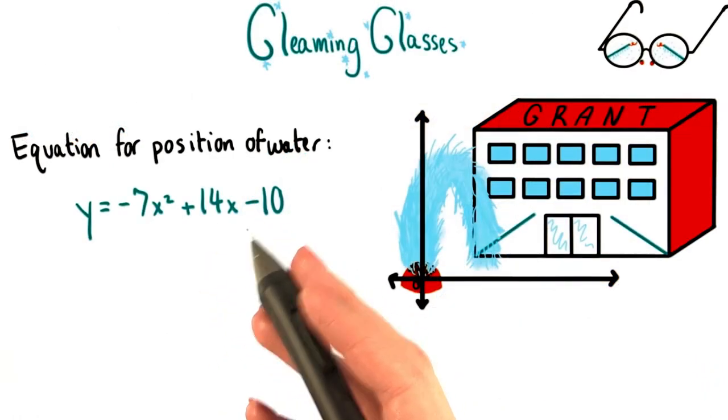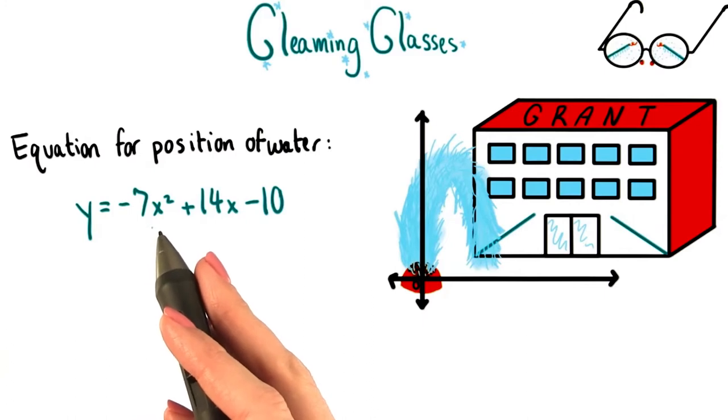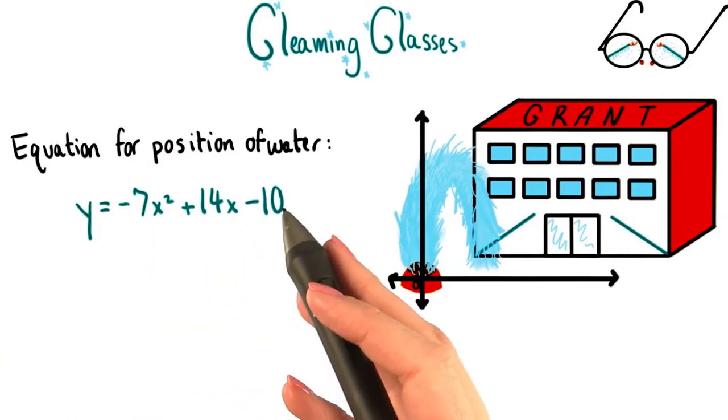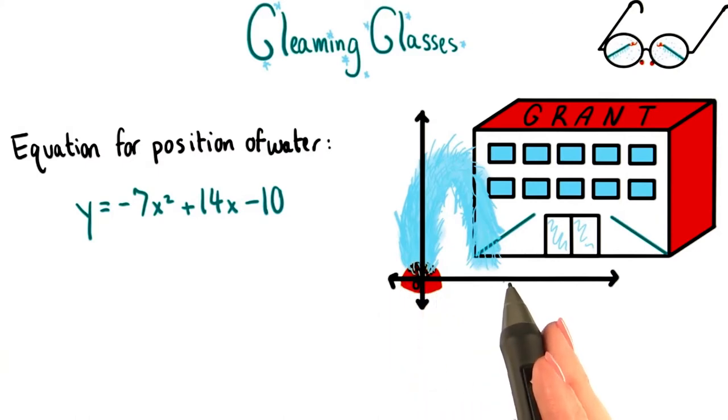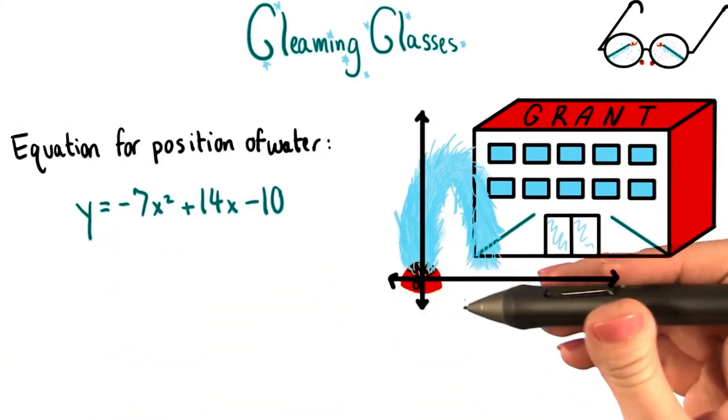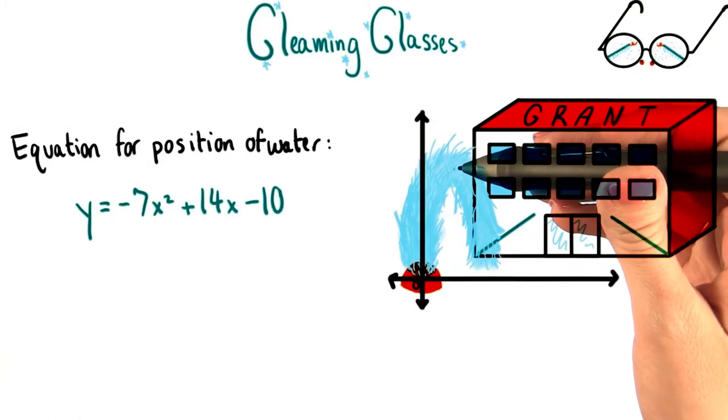Here's the equation that Grant came up with. Y equals negative 7x squared plus 14x minus 10. In this equation, x stands for the horizontal position of the water at a given moment, and y stands for the corresponding vertical position of that same drop of water.